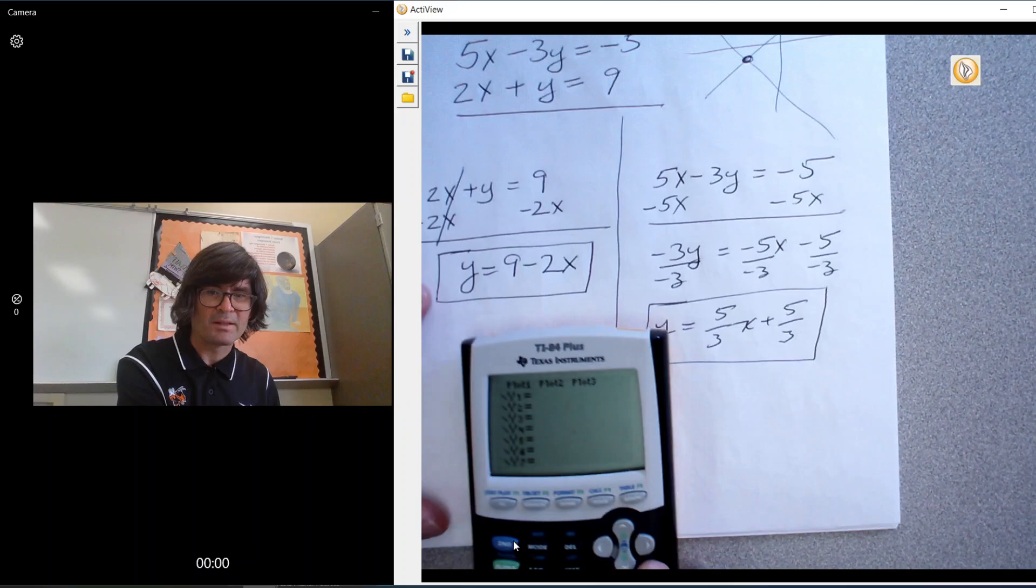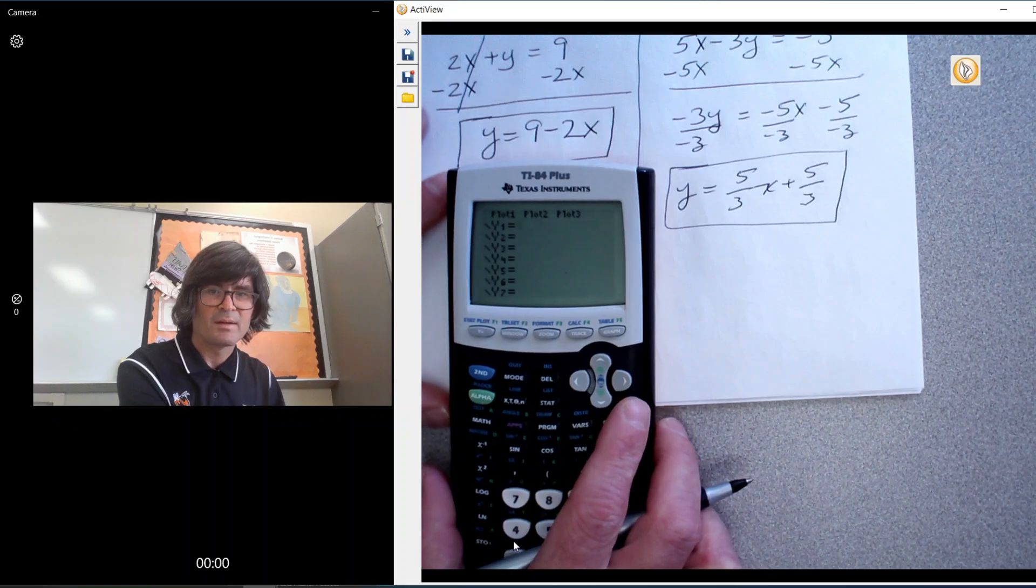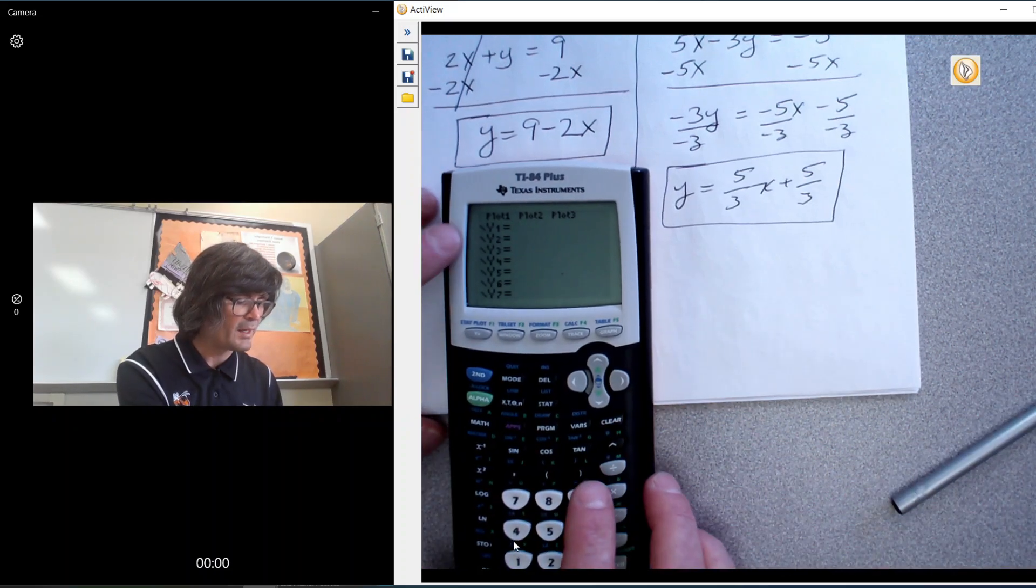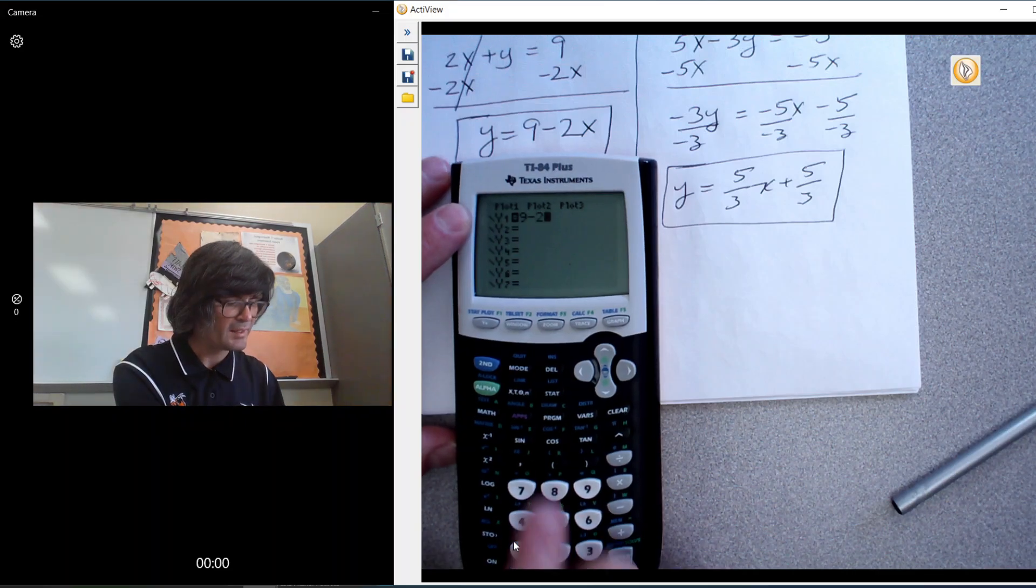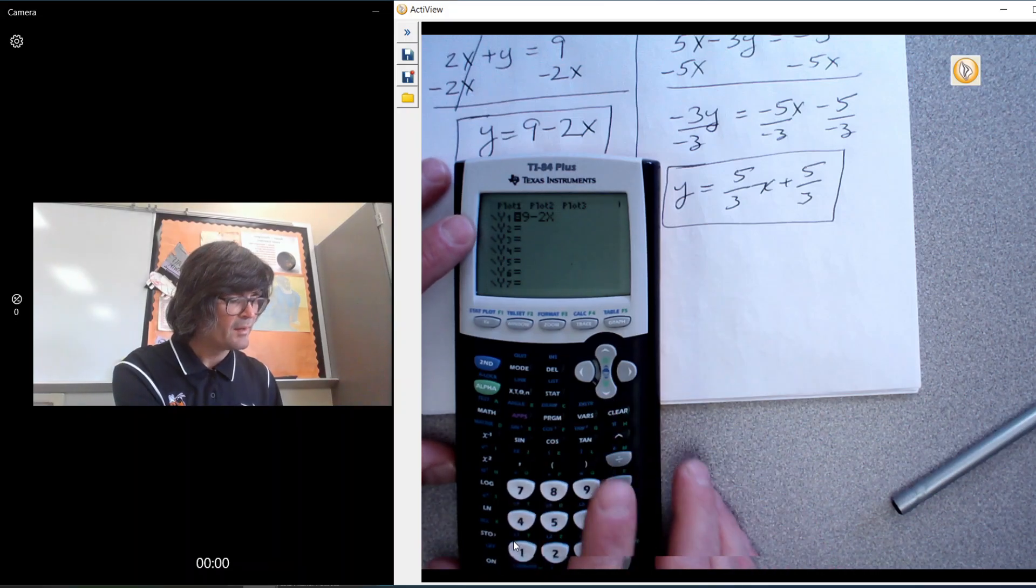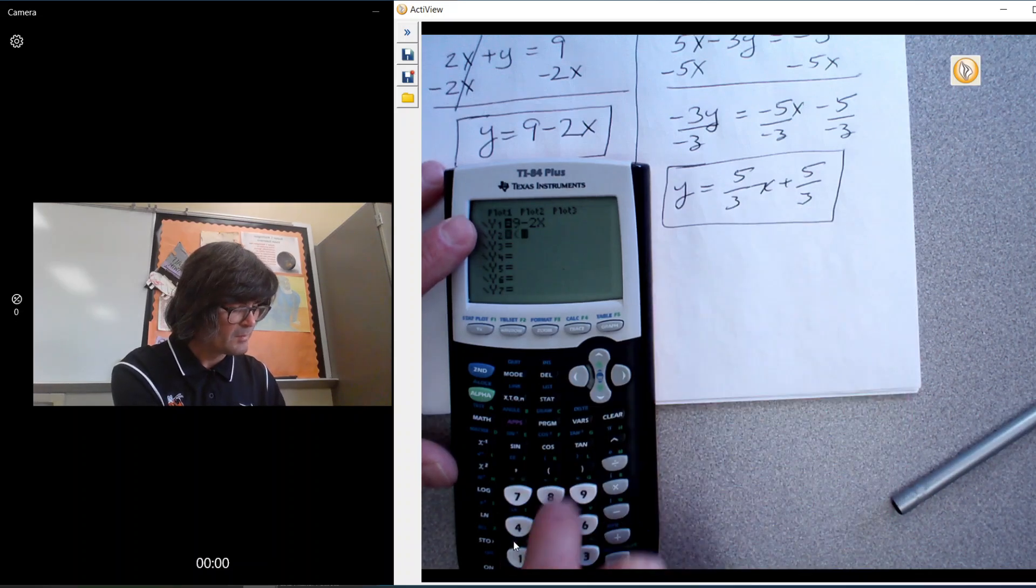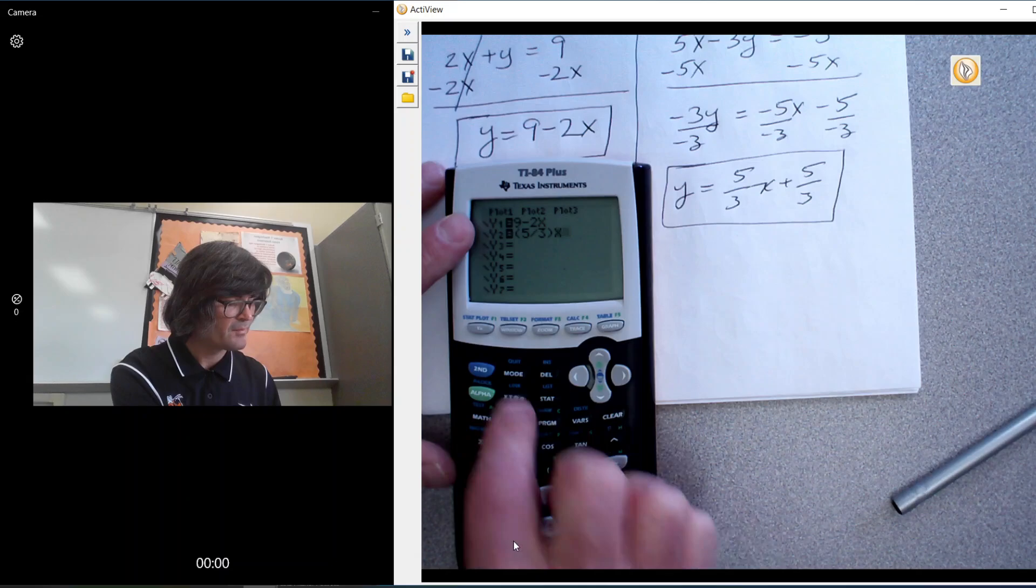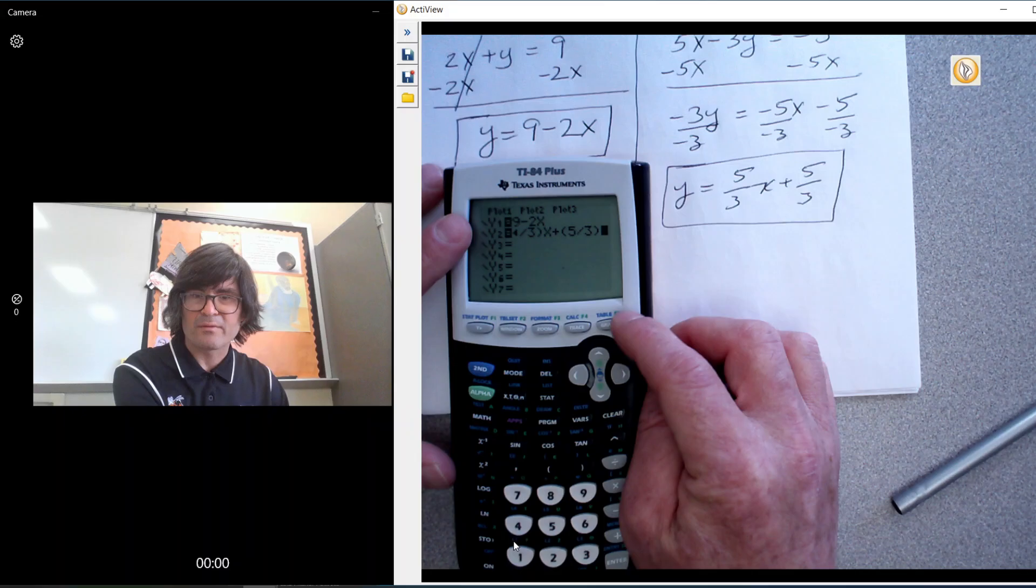I'm going to type these into my calculator. We'll move the paper up so you can see everything. For starters, we're going to do y equals 9 minus 2x. It could be minus 2x plus 9, the order doesn't matter. We'll go down. I'm going to do 5 thirds x plus 5 thirds. 5 thirds will be in parentheses like that, x plus 5 thirds. We've typed in both equations and now we're going to hit graph.